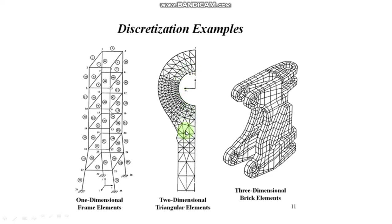You can also use quadrilateral elements. But for irregular shapes, triangular elements will be best. For regular shapes, quadrilateral elements will be best. Here we use two-dimensional elements for analysis. Third figure is a three-dimensional object, so we need to use three-dimensional elements. If the structure is irregular, we use tetrahedral elements. If the structure is regular, then we use hexahedral elements. Next topic is selecting the element type of mesh.